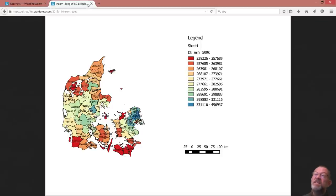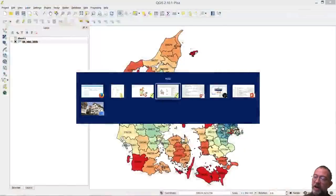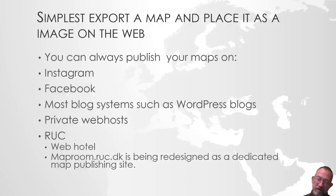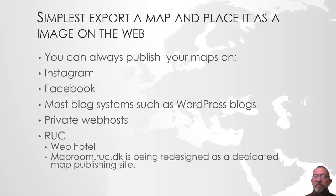Easy peasy — a way of simply getting a map onto the web without having to do much. Just request a free WordPress blog and upload the media that has been outputted from the map designer. So that's the basic, simple way of doing it. But you shouldn't neglect it, because it gives you the best possibilities for having a nice design. It also gives you the ability to put text, graphs, and other things onto the same blog. So it might be simple and old-fashioned, but it also has quite a lot of qualities to it.